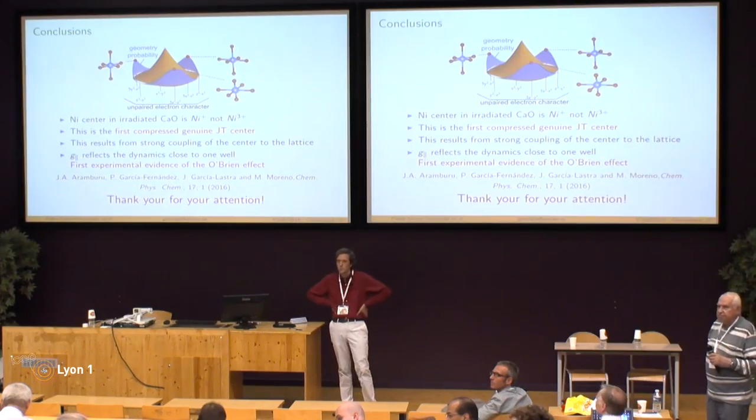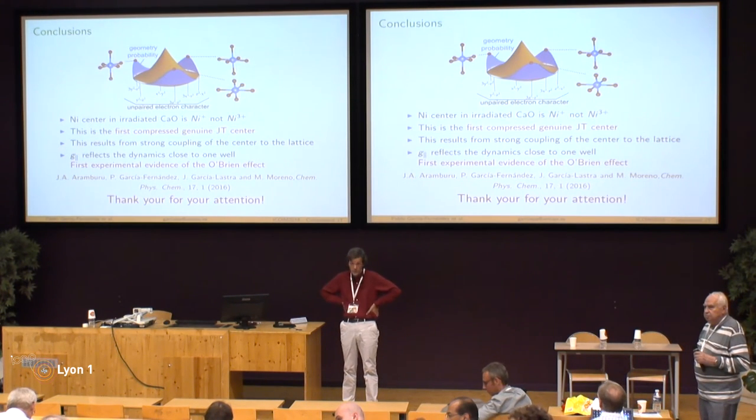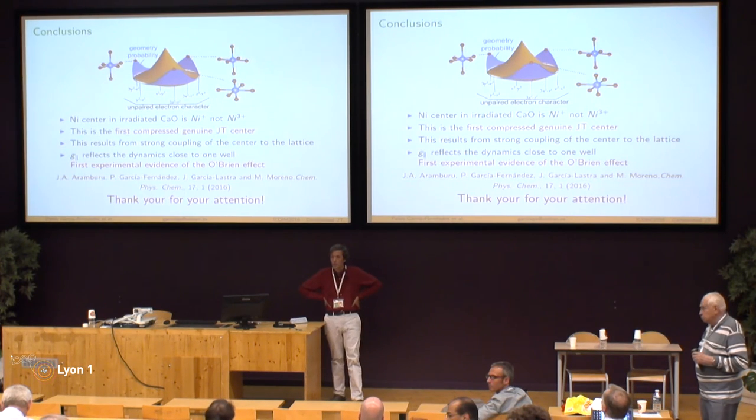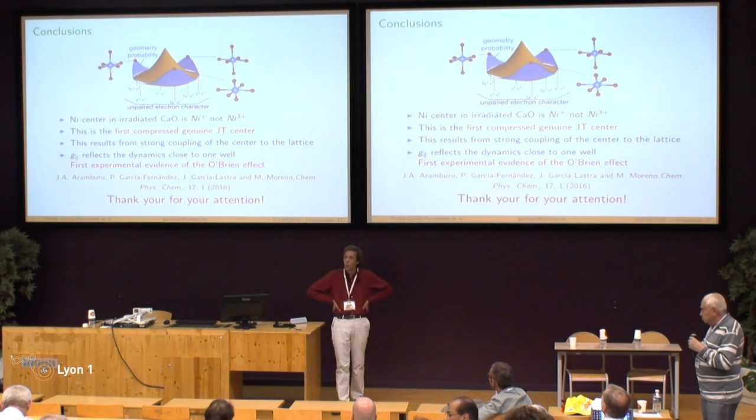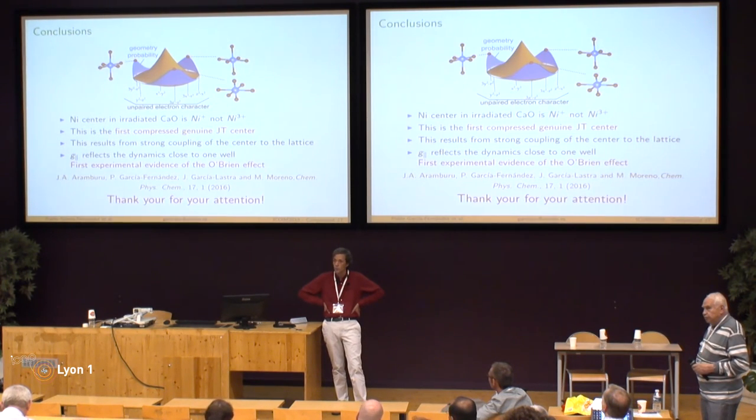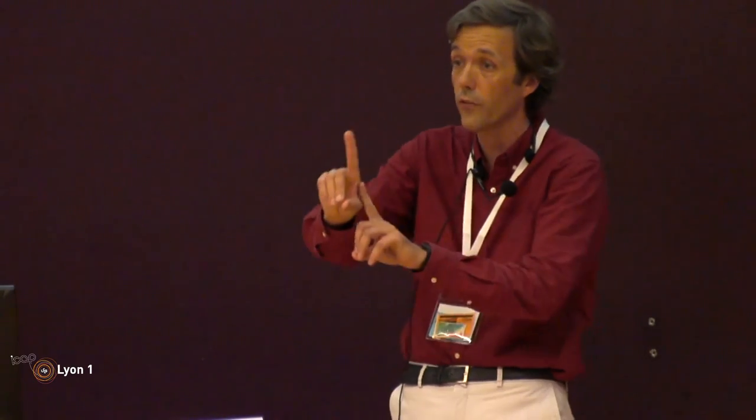For nickel, the most stable oxidation state should be plus two. Yes. So we have the two-plus gone. Well, the thing is that you irradiate — you are essentially removing one electron from, or adding an electron into, nickel through irradiation. It's a metastable system. But what they are observing is this particular state where you have a spin-one-half, so you know it cannot have the usual D8 configuration of nickel where you have spin one. This is a spin-one-half signal.